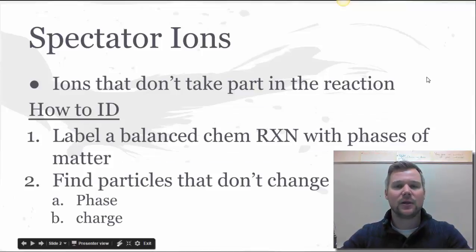Now spectator ions are a lot like spectators when we use that in more of a popular culture term. They're the part that don't actually take place in the reaction but they might be just there to kind of see what's going on. We're going to look at a balanced chemical equation and label the phases of matter for each substance, then find the particles that don't change phase of matter or don't change their charge.